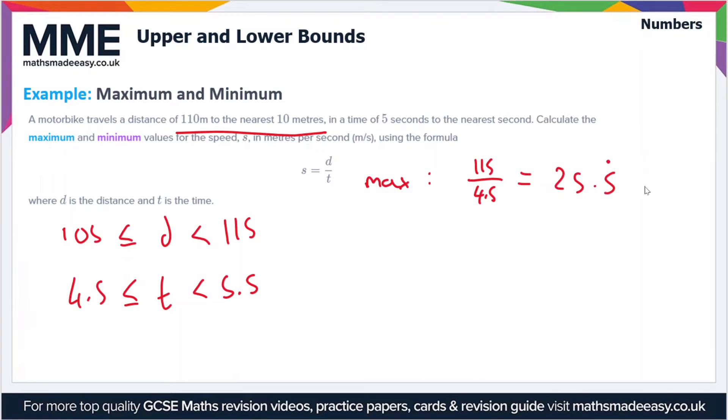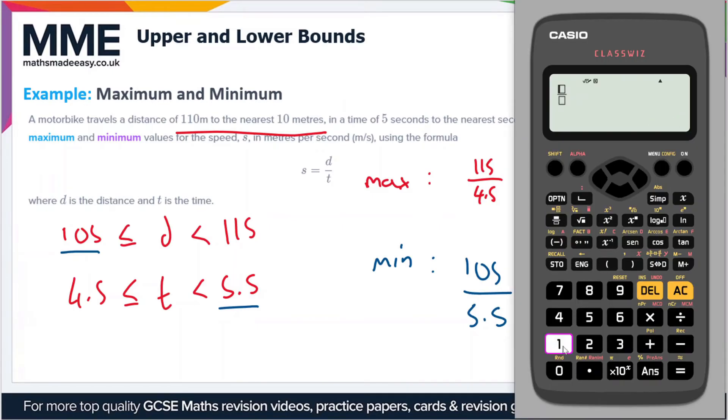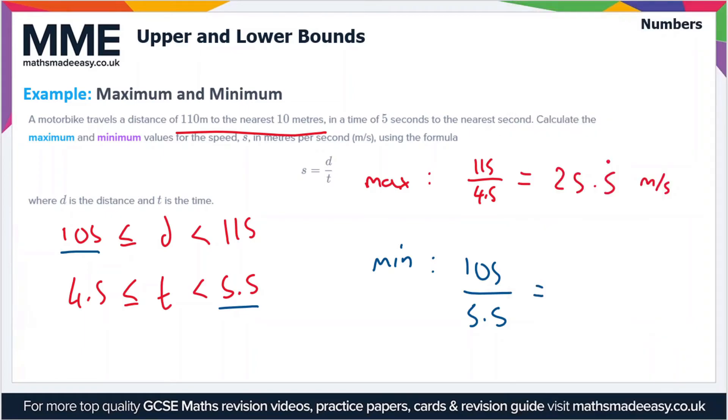Then for the minimum value, we're going to deal with the smallest value of the distance and the largest value of the time. So that's 105 meters and the large value of time is 5.5 seconds. So we've got 105 divided by 5.5, which I'll put into the calculator. That gives us a value of 19.09 recurring, and that's also in meters per second.